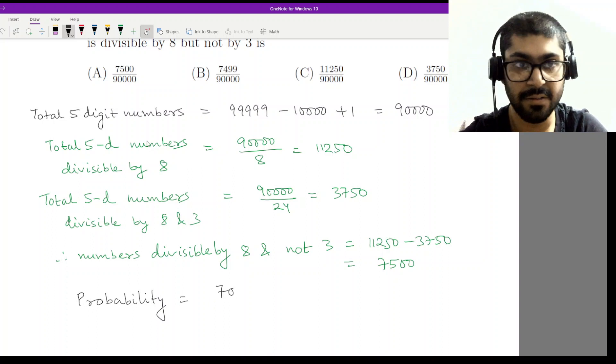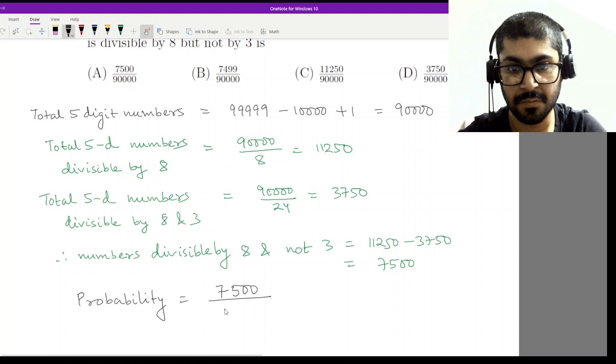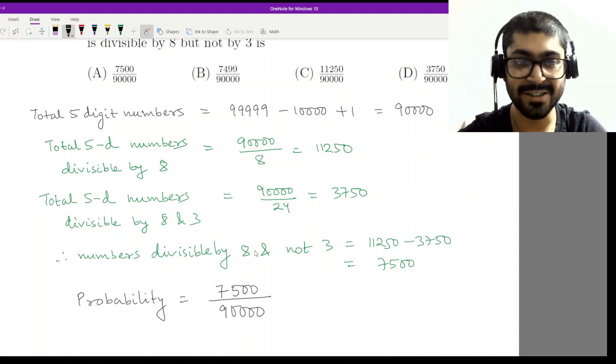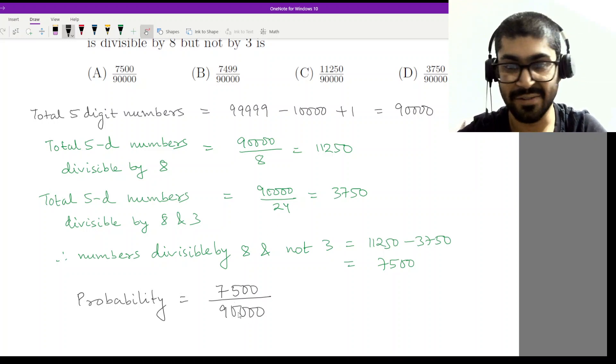Now we are done. The probability is 7,500 divided by 90,000.